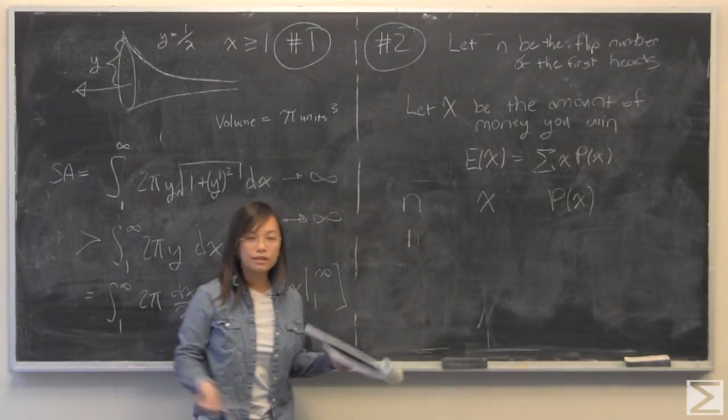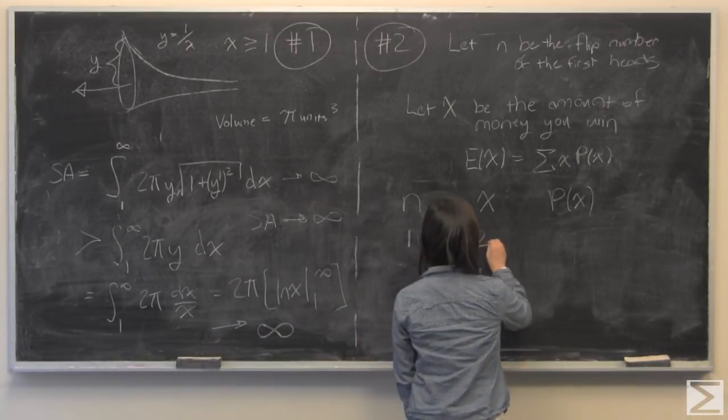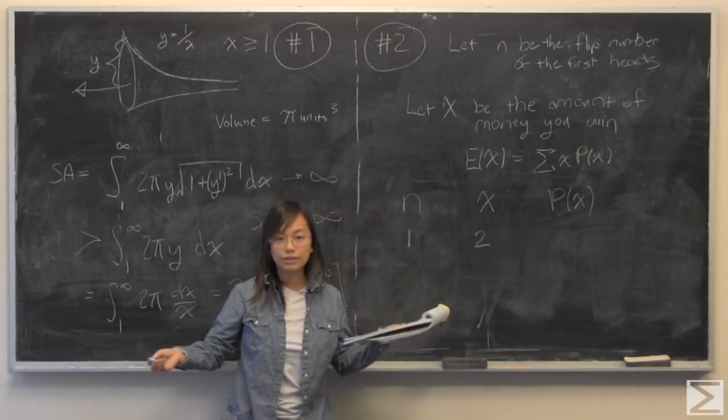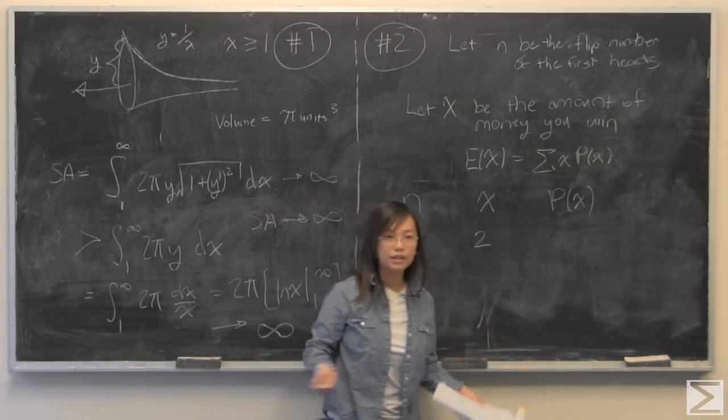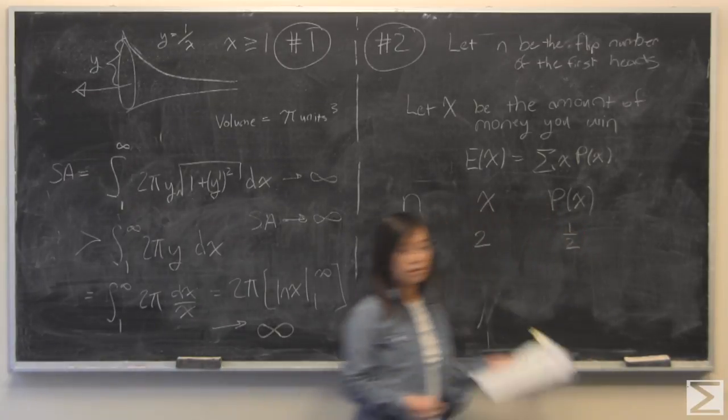So let's just start by the easy case. One, so theoretically on your first try you get heads. So if that happens you get two dollars. And the probability of this is just fifty-fifty because if you have a fair coin, you flip it, there is a fifty percent chance of tails, fifty percent chance of heads. So the probability of that is one half.